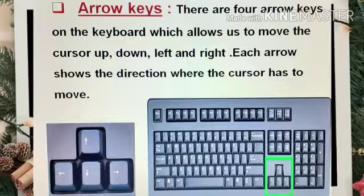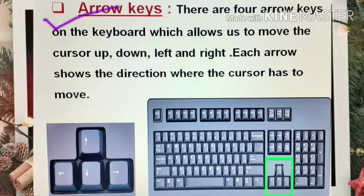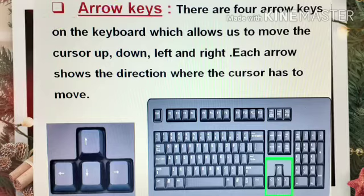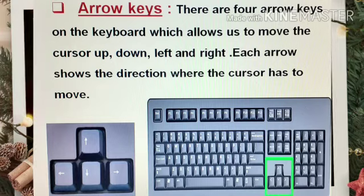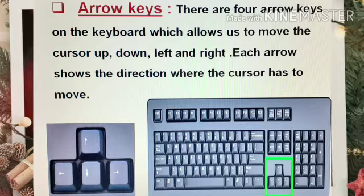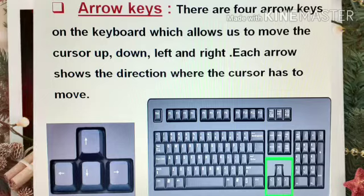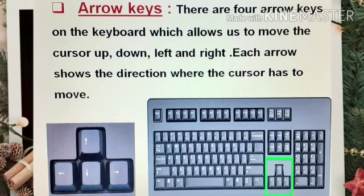Now let's discuss some more keys that are present on the keyboard. Here come the arrow keys. There are four arrow keys on the keyboard, which allow us to move the cursor up, down, left, and right. Each arrow shows the direction where the cursor has to move. As you can see in the below picture, the green color rectangle shows the four arrow keys that are present on the keyboard.